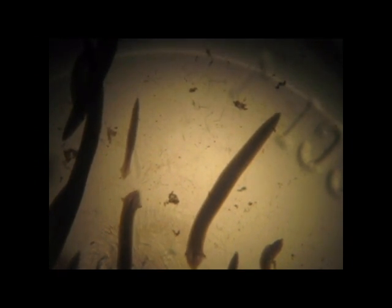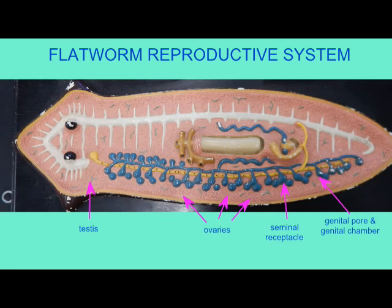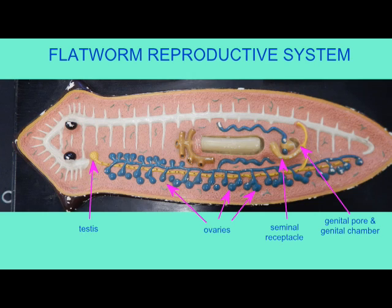There are variations in how different flatworms reproduce. Some are asexual and some are capable of both asexual and sexual reproduction. The most typical form is sexual reproduction, in which flatworms are hermaphroditic, producing both testes and ovaries, although most cannot fertilize themselves.